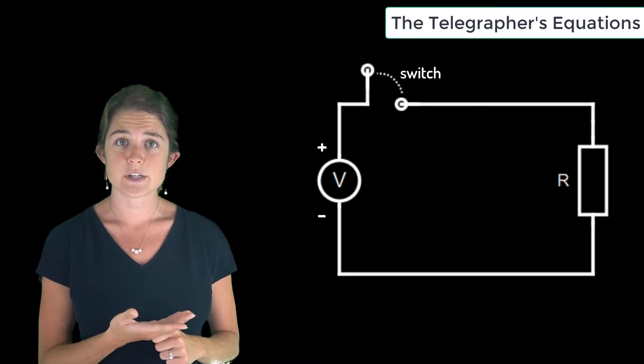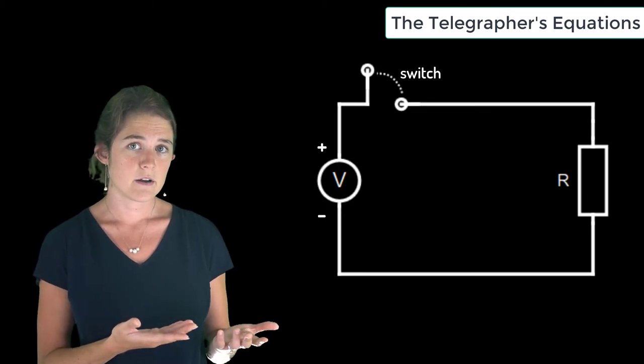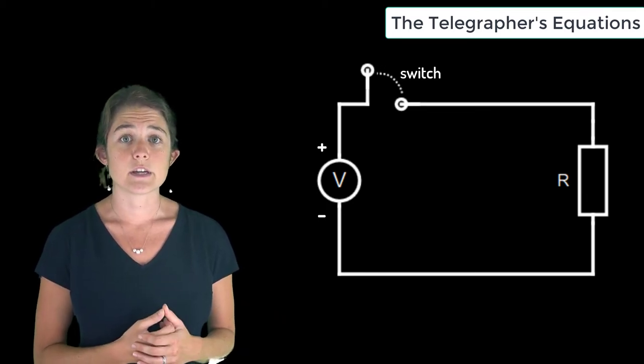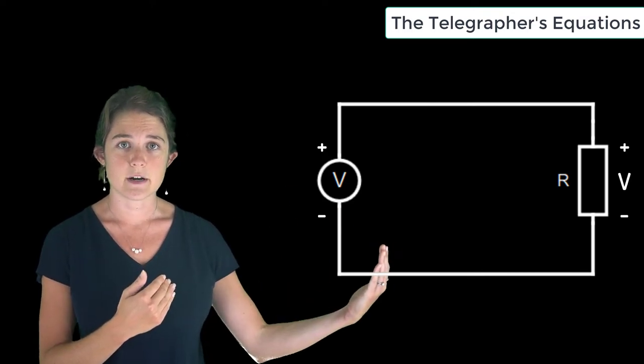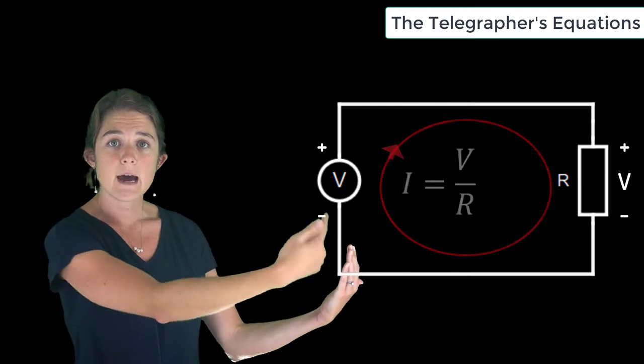So for instance, this circuit which has a voltage source V and a resistor R could be simply analyzed using Ohm's law. When the switch closes, the voltage from the source will instantly appear across the resistor and a current I will flow around the loop that is equal to V divided by R.